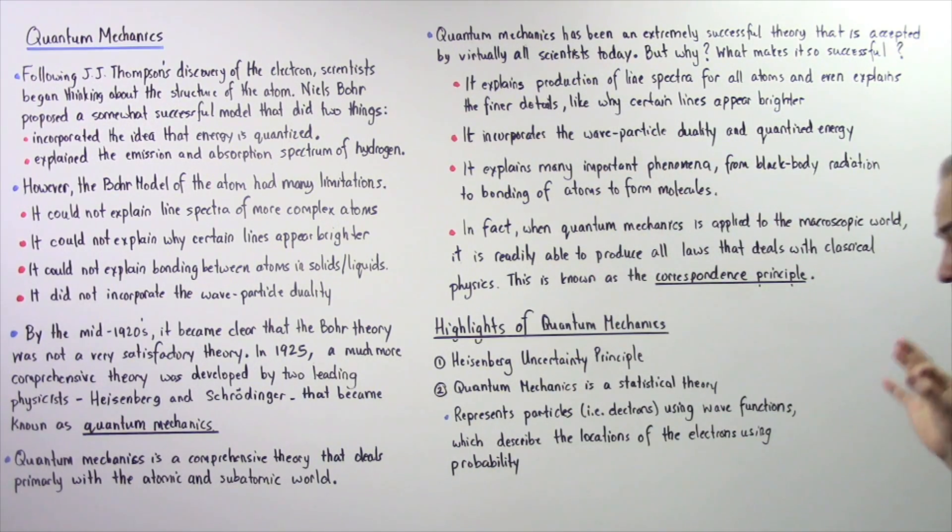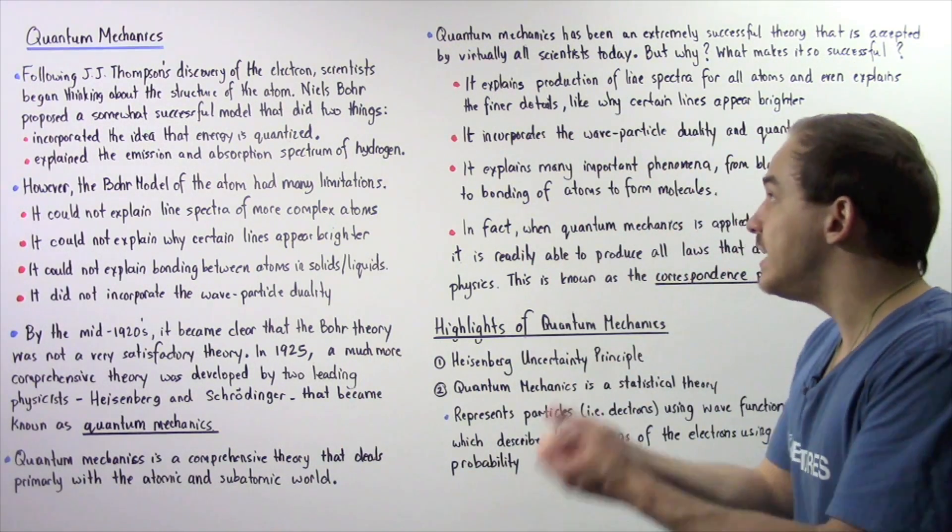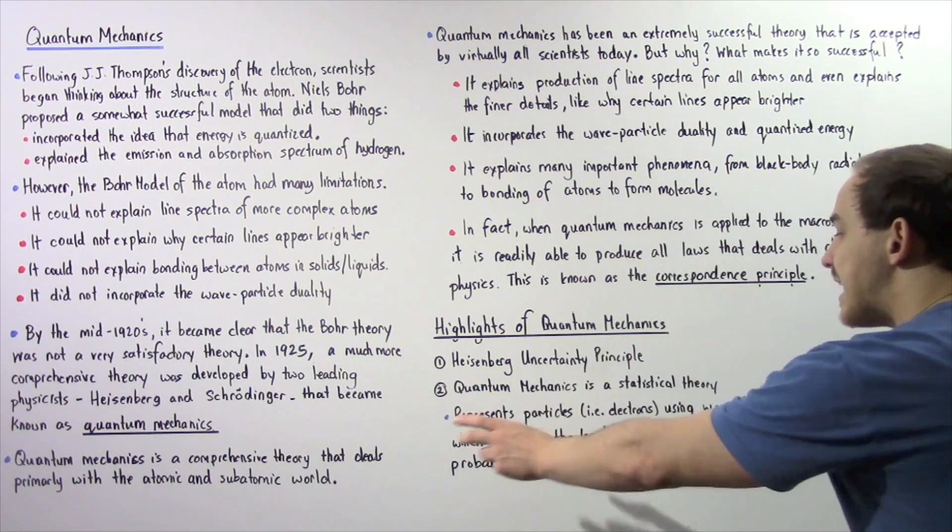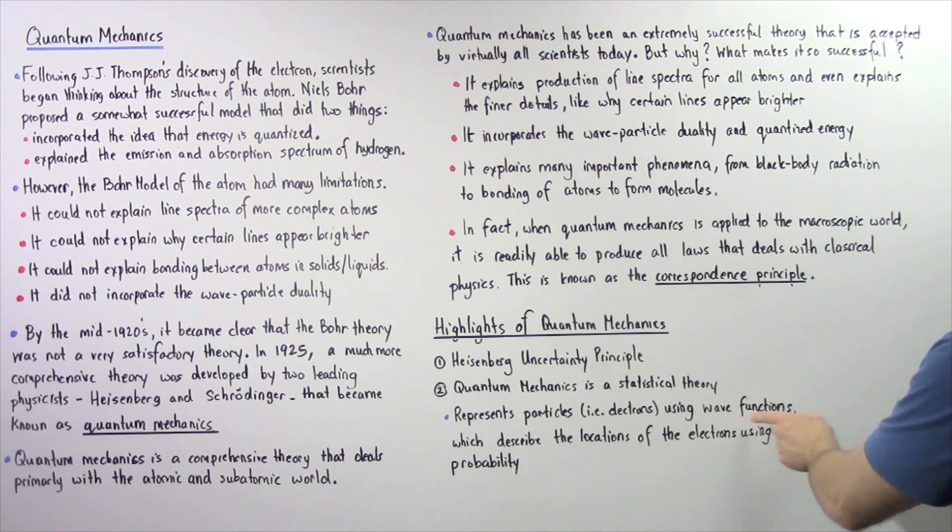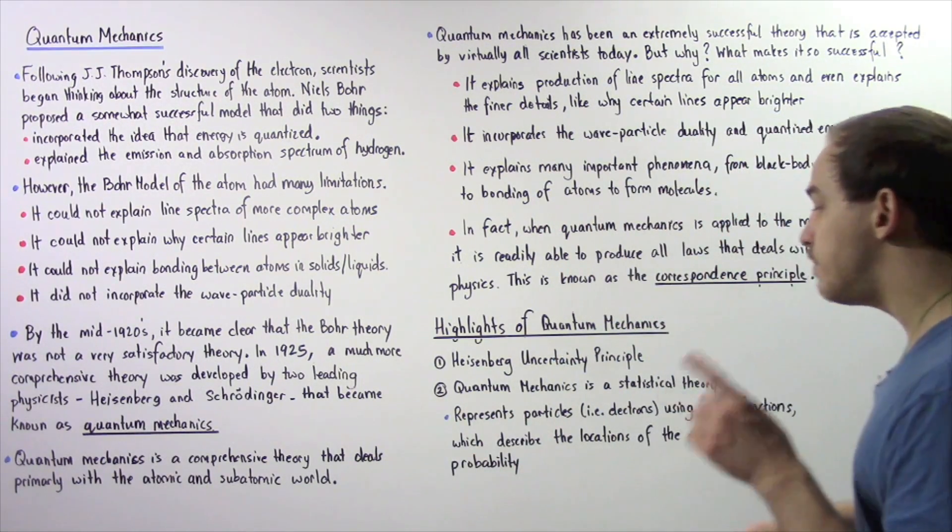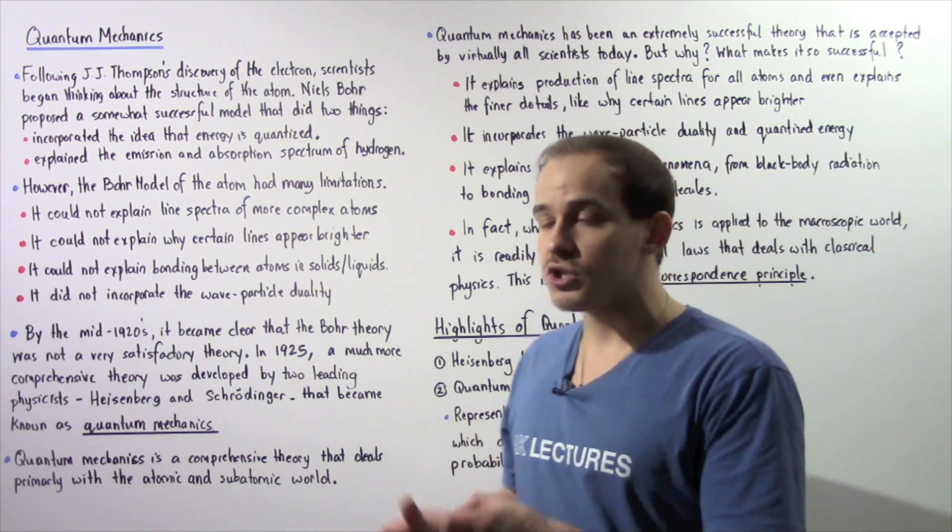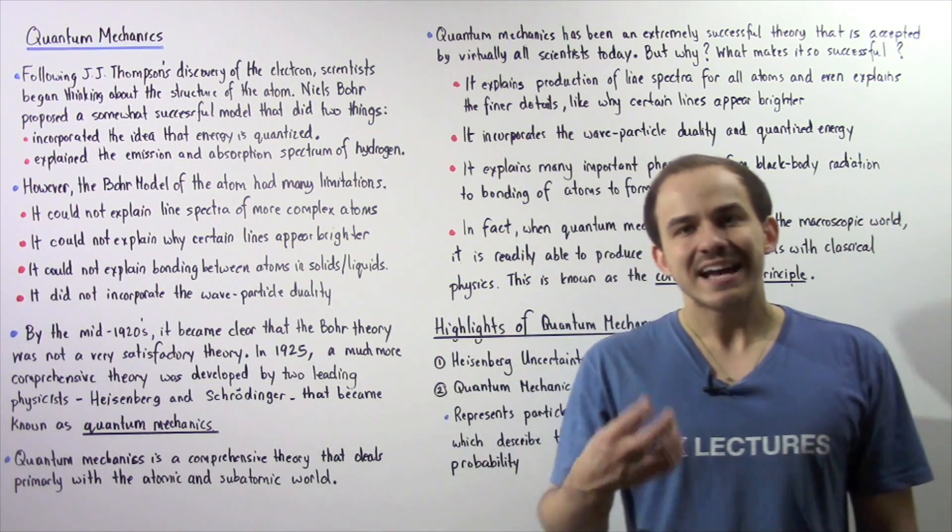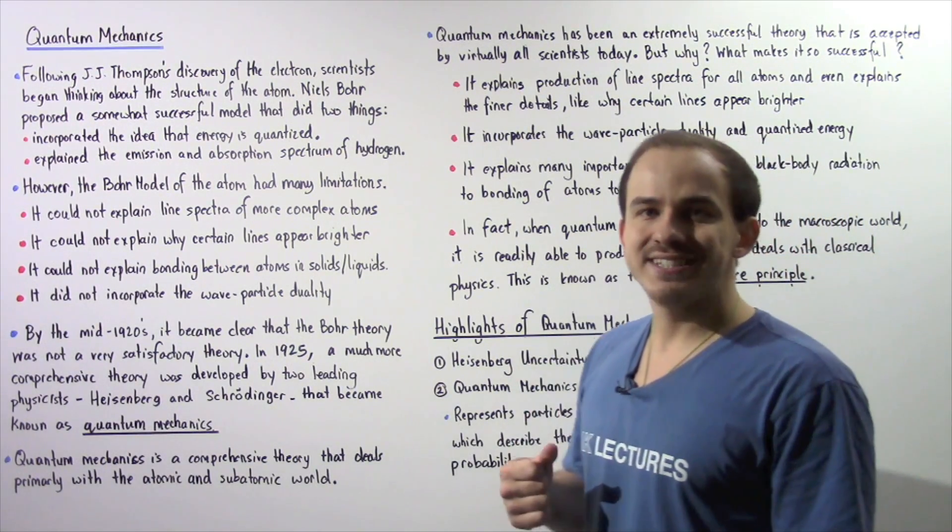And secondly, quantum mechanics is in fact a statistical theory. So it basically incorporates the wave-particle duality and it represents particles, i.e. electrons, using equations known as wave functions. Now if you square the wave function, that describes the locations of electrons or particles using mathematical probability. So in the next several lectures, we're going to discuss these two points in much greater detail.